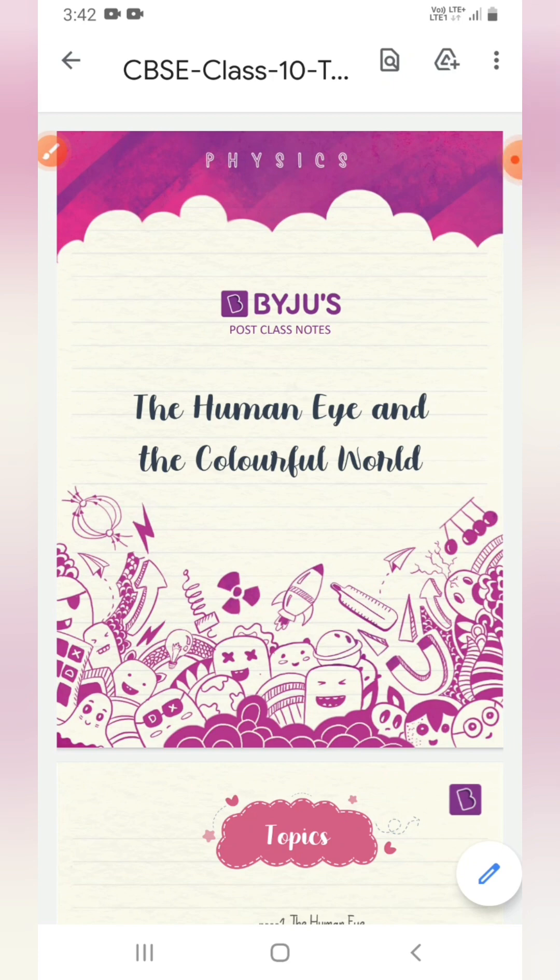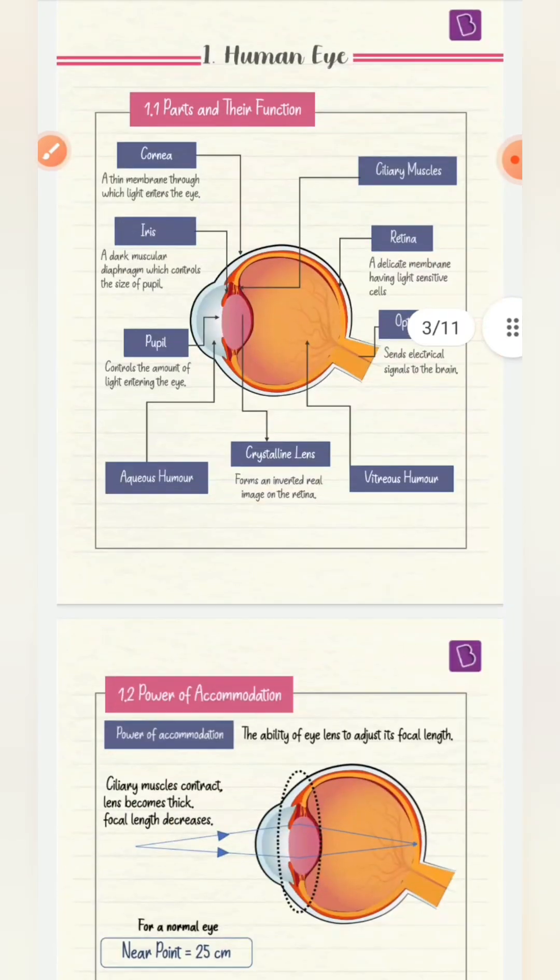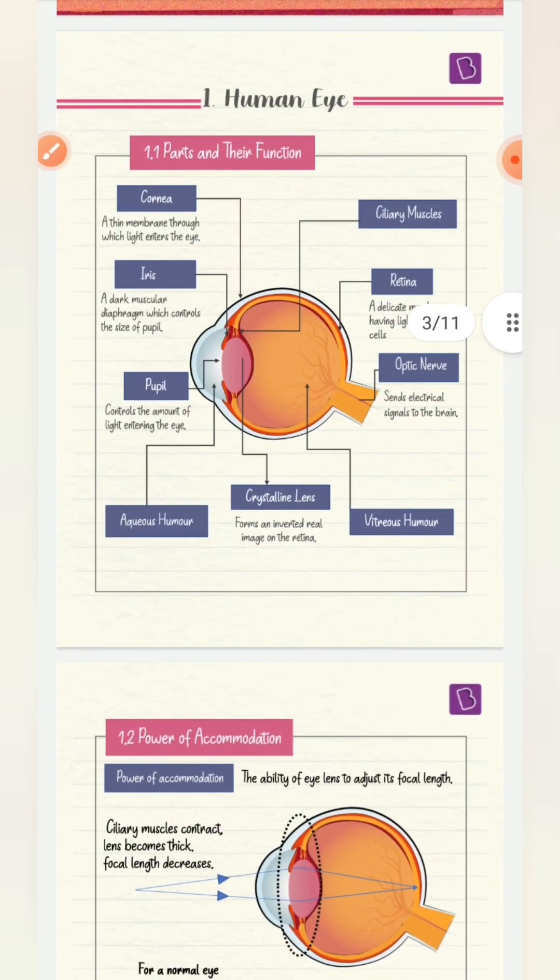So this is the last chapter. In Physics, I've uploaded all the chapters and notes. For Chemistry, only the Chemical Reactions and Equations chapter is remaining. The link has been uploaded by me, but the video has not been shared. So I'll be sharing the video of Chemical Reactions and Equations also,